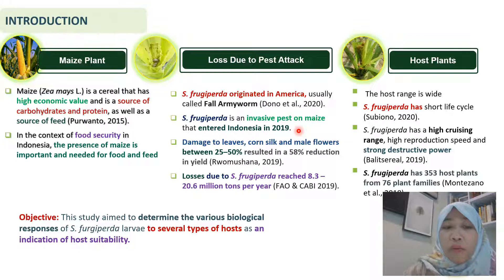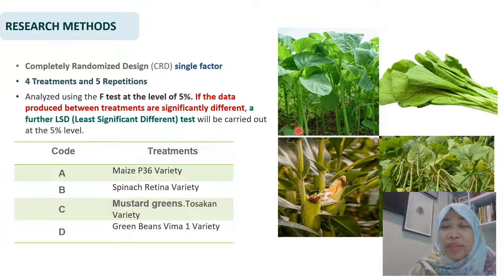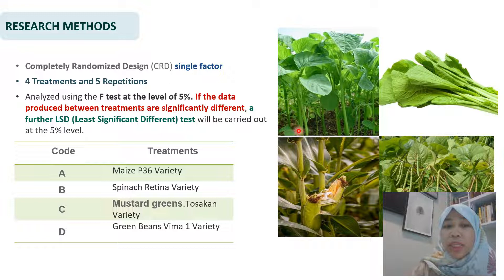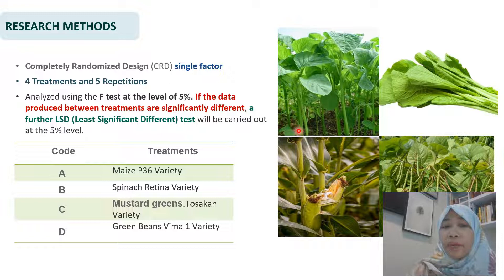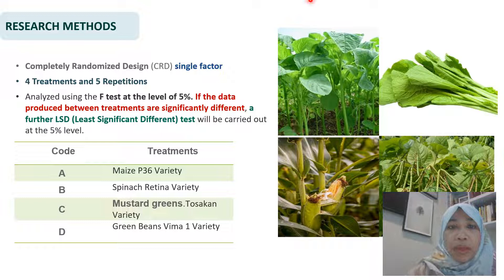The objective of this research is to determine the various biological responses of S. frugiperda larvae in several types of host plants as an indication of host suitability. The research method used a completely randomized design (CRD), single factor, with four host treatments: maize P36 variety, spinach Retina variety, mustard green Tosakan variety, and green bean Perkasa variety. We used five repetitions and analyzed using an F-test at the 5% level. If the data were significantly different, a further test using LSD was carried out at the 5% level.